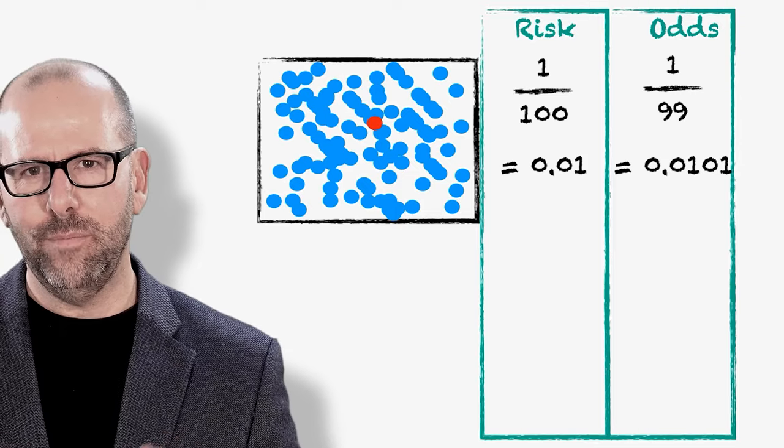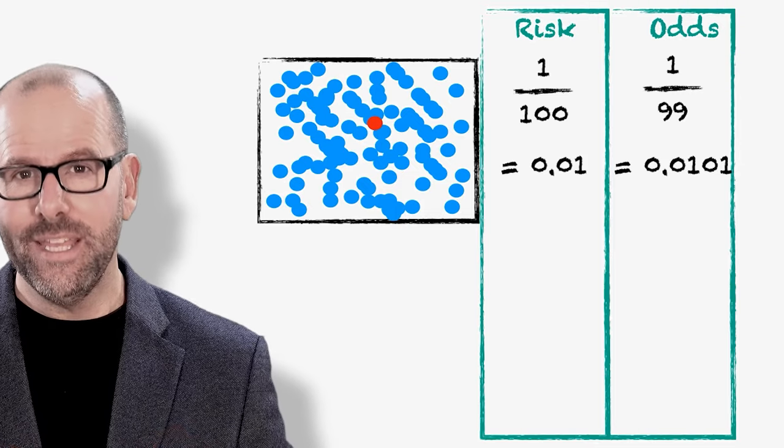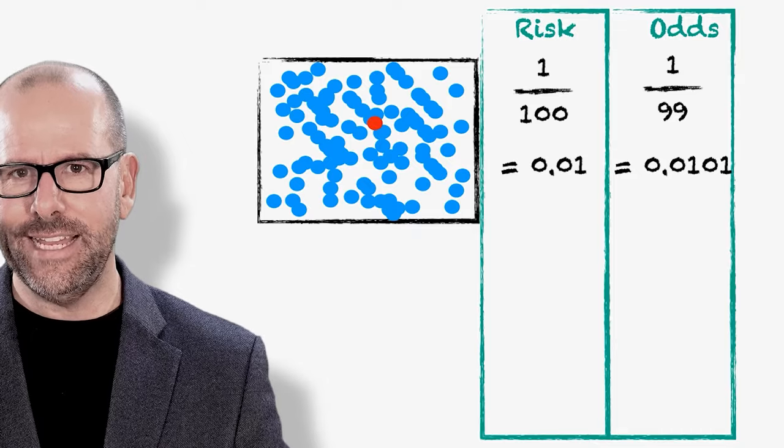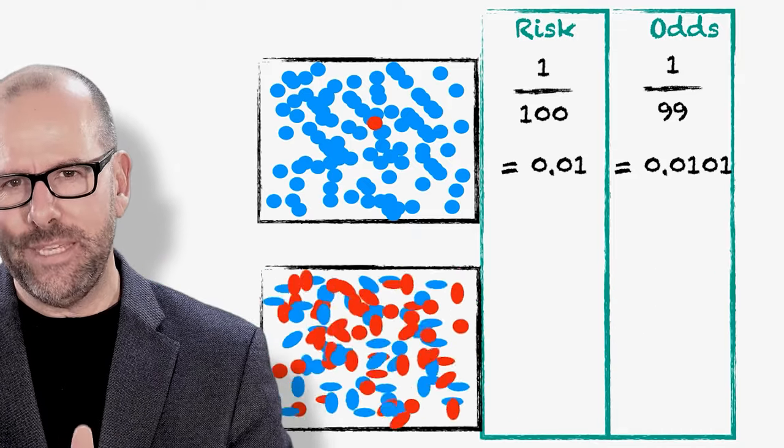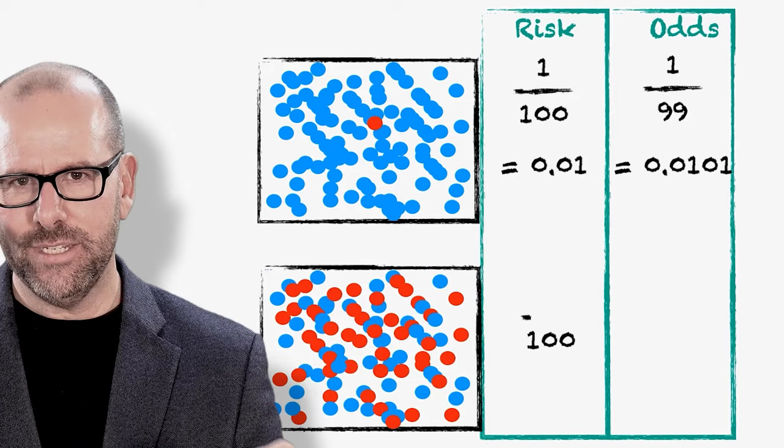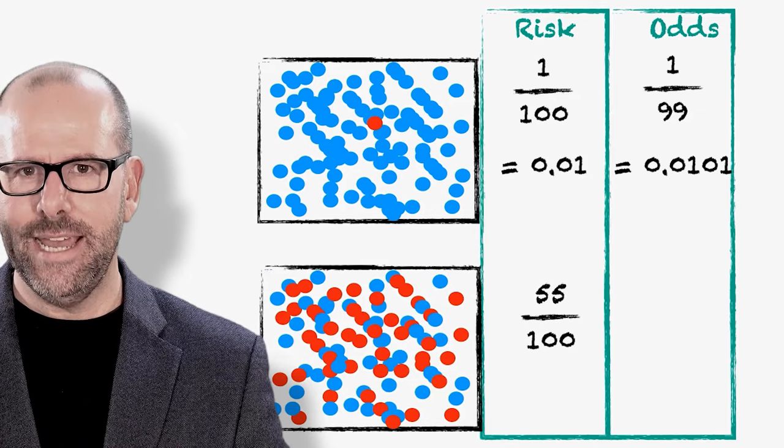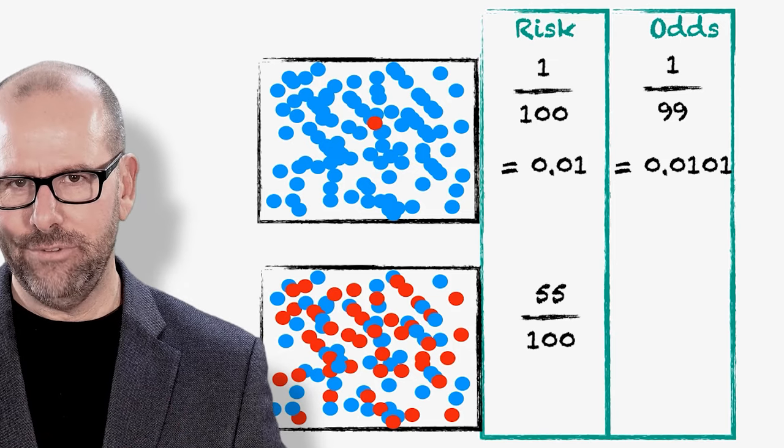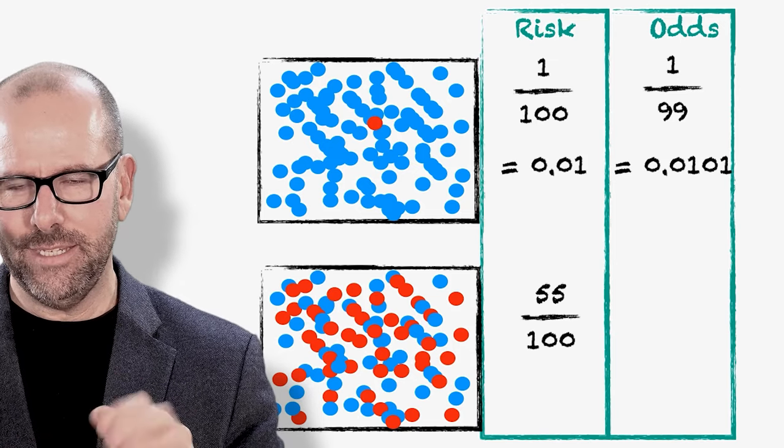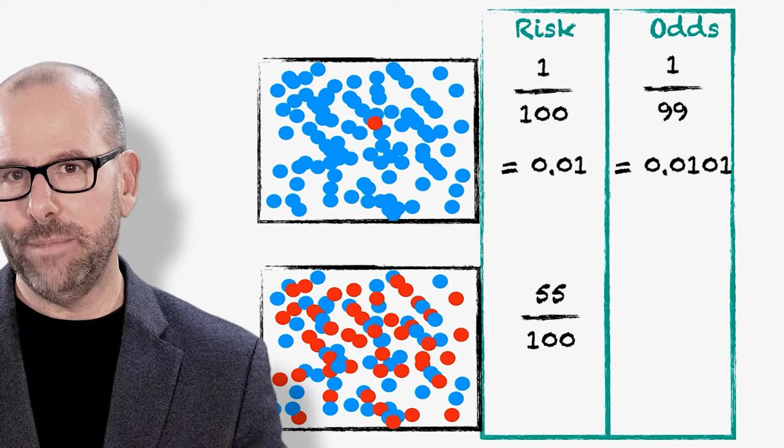Where this becomes more apparent, the difference between them, is when the incidence is higher. So let's change the scenario slightly. Let's imagine that 55 people in this movie sneezed during the time of the film. Now, the risk of sneezing is 55 over a hundred. So 55, the number of people who sneezed, divided by a hundred, the number of people at risk of sneezing at the beginning.